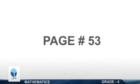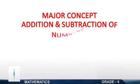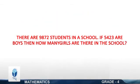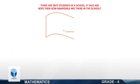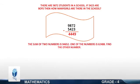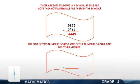Page 53. Major Concepts: Addition and Subtraction of Whole Numbers. Resource Pack Concepts: Addition and Subtraction of Whole Numbers. There are 9,872 students in a school. If 5,423 are boys, then how many girls are there in the school? Yes, your answer is 4,449. The sum of two numbers is 94,652. One of the numbers is 62,428. Find the other number. Yes, your answer is 32,164.